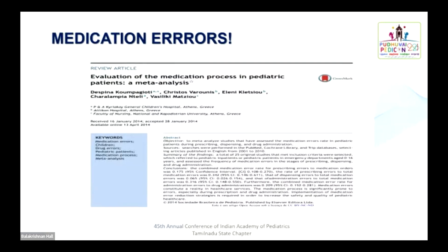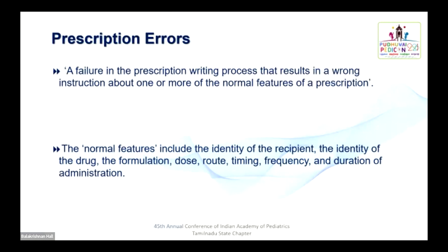There are a lot of medication errors occurring in pediatric prescription — in the form of prescription error, dispensing error, and administration error. The most important error to understand is prescription error: a failure in the prescription writing process that results in a wrong instruction about one or more normal features of the prescription. Errors may occur in the identity of the recipient, identity of the drug, formulation, dose, route, timing, frequency, and duration of administration.